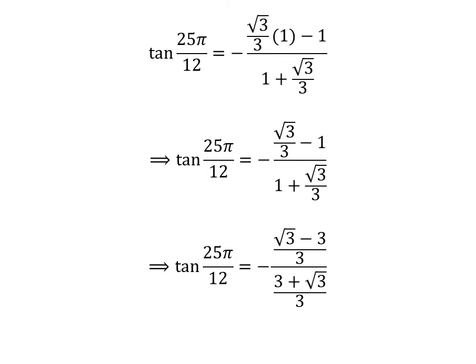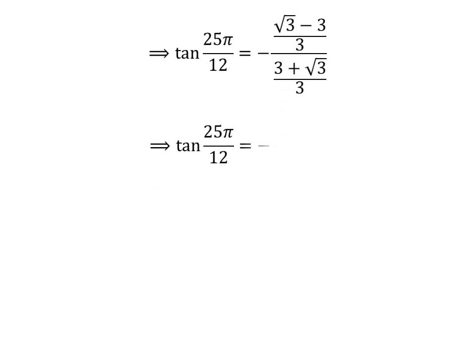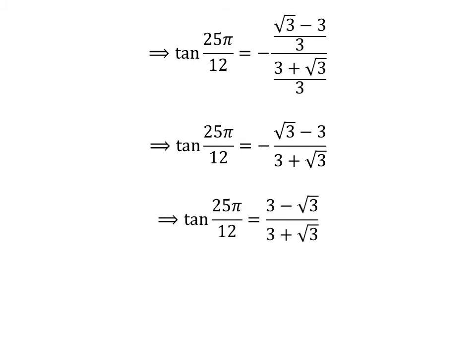Further simplification gives us tangent of 25 times pi upon 12 is equal to minus of square root of 3 minus 3 upon 3 upon 3 plus square root of 3 upon 3. Cancelling out the common factor 1 upon 3 gives us tangent of 25 times pi upon 12 is equal to minus of square root of 3 minus 3 upon 3 plus square root of 3. Since minus of square root of 3 minus 3 is 3 minus square root of 3, tangent of 25 times pi upon 12 is equal to 3 minus square root of 3 upon 3 plus square root of 3.